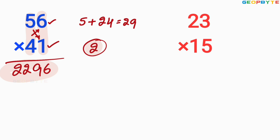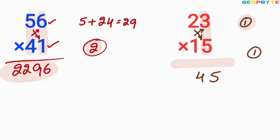See how simply you are getting the answer. Similarly, look at the next number: 23 multiplied by 15. First, multiply 3 and 5: 3 into 5 is 15. Write 5 here, 1 balance. Then cross multiplication: 2 into 5 plus 1 into 3 — that is 10 plus 3 — equals 13, plus 1 balance is 14. Write 4 here, 1 balance. Then 2 into 1 is 2, plus 1 balance equals 3. So 345 is the value of 23 multiplied by 15.